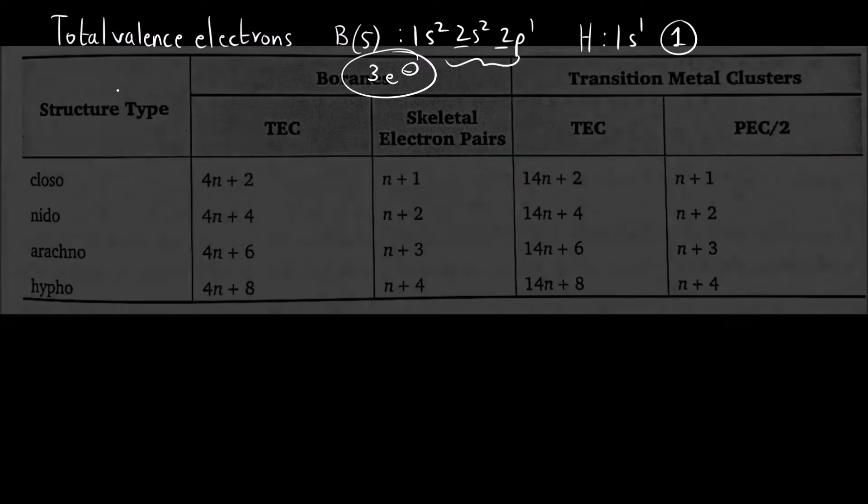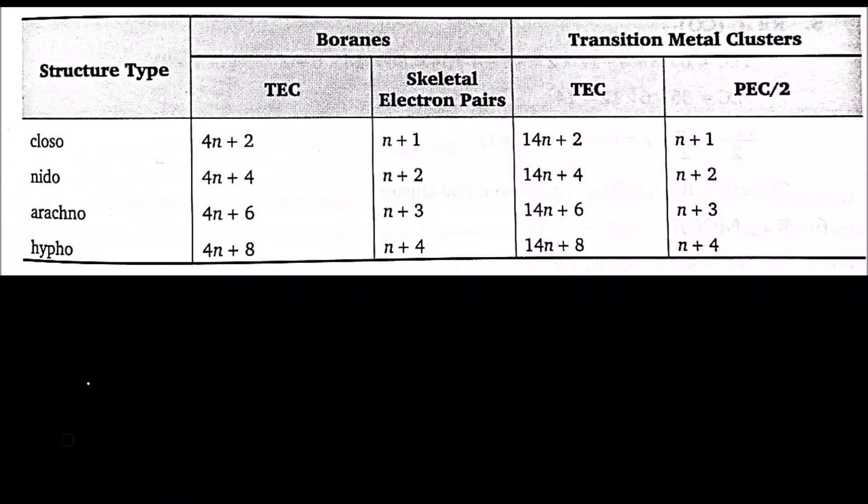The first step is to calculate the total electron count or total valence electrons. We know boron has how many electrons? Boron has Ns2, Np1. Atomic number is five, so it will be 1s2, 2s2, 2p1. Valence shell is second one, so there are three electrons. Hydrogen has only one electron, 1s1. Boron has three valence electrons.